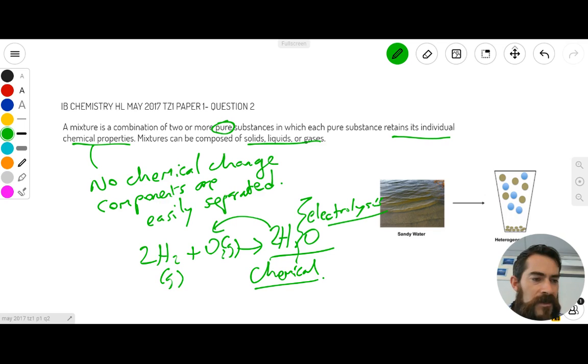But the three statements that we have to decide if they are correct or not, the first statement is the components may be elements or compounds. So yes, you can have a mixture of elements and compounds. For example, if I just scroll down my page here a bit.